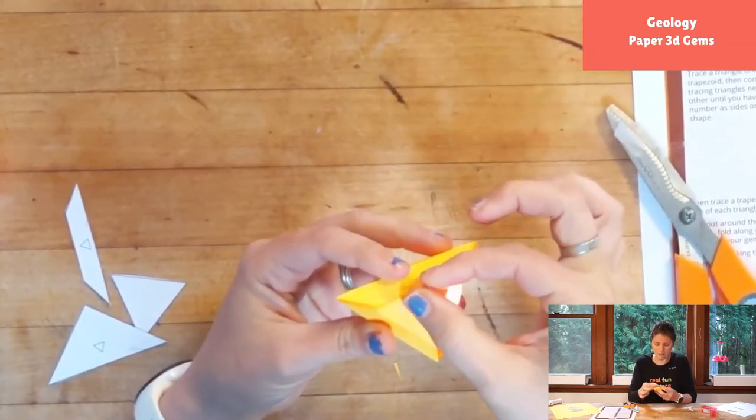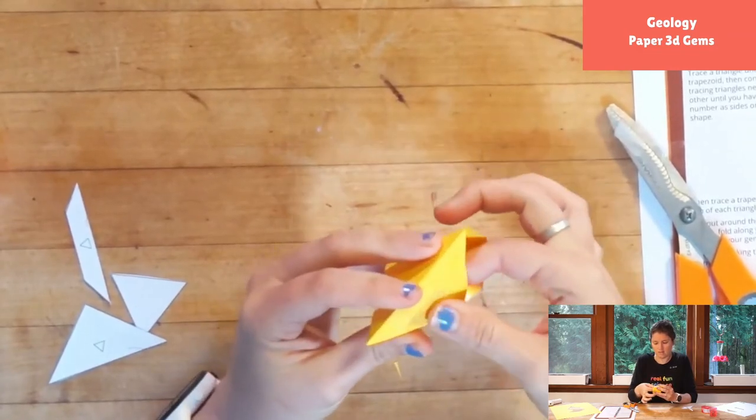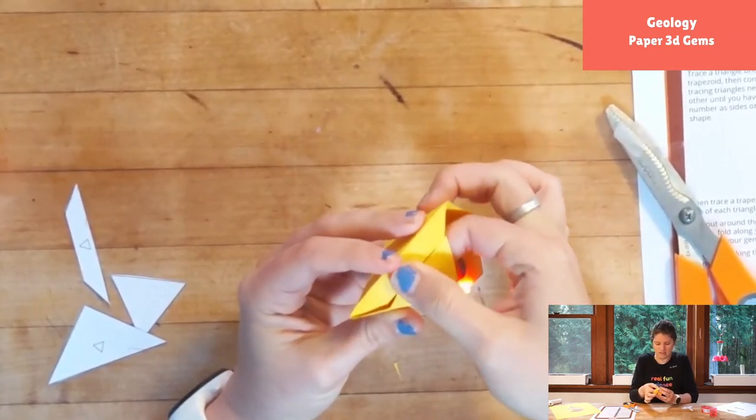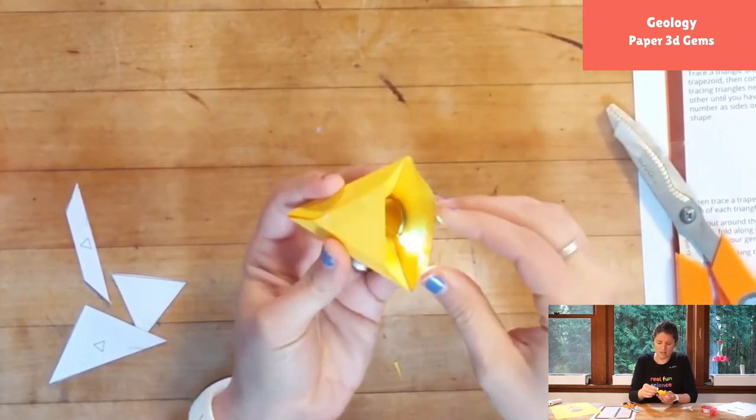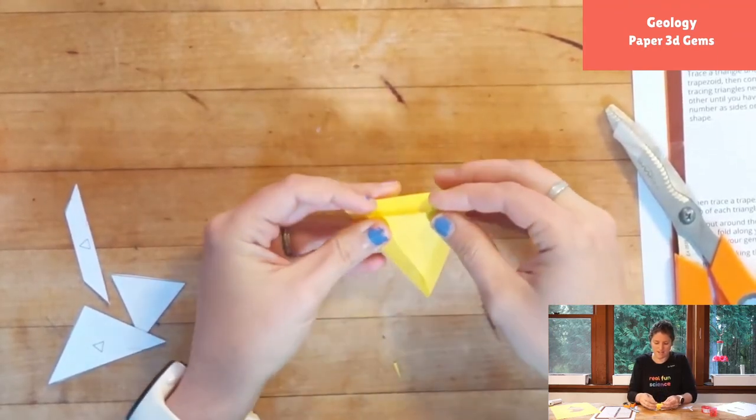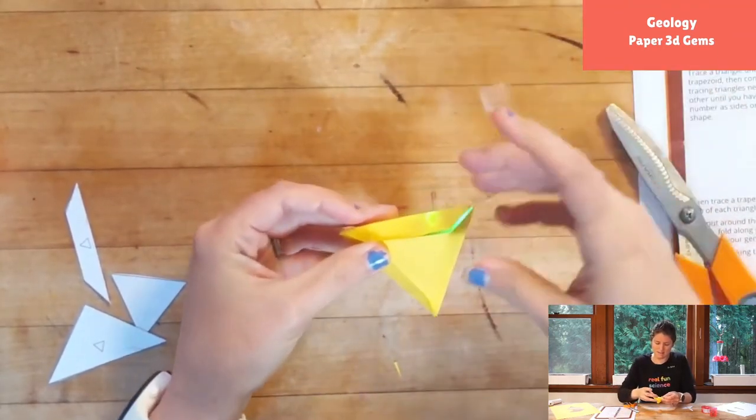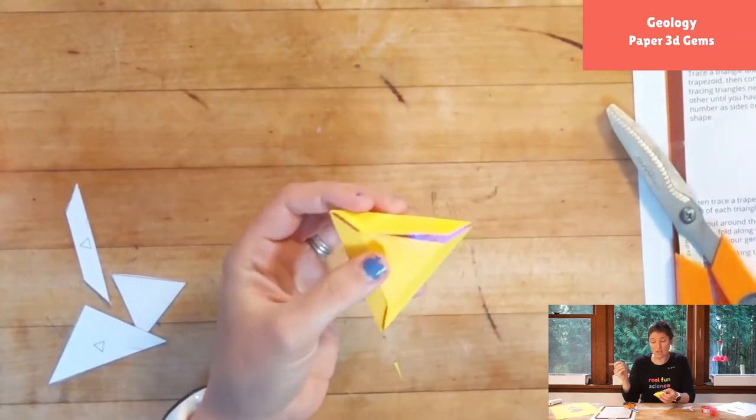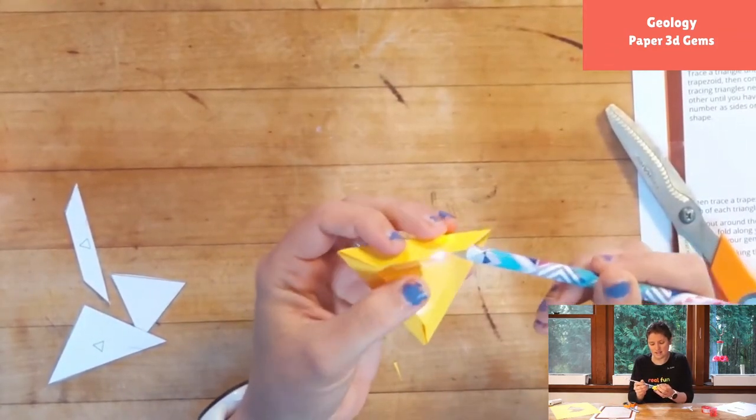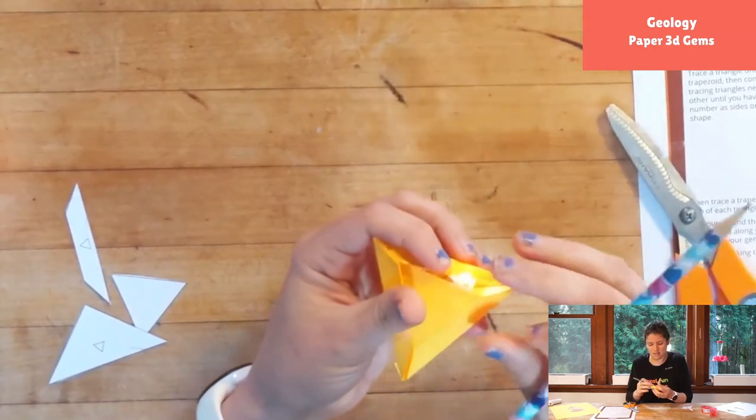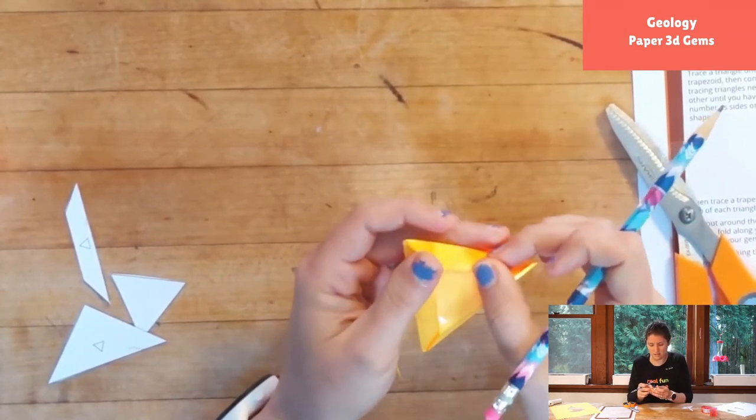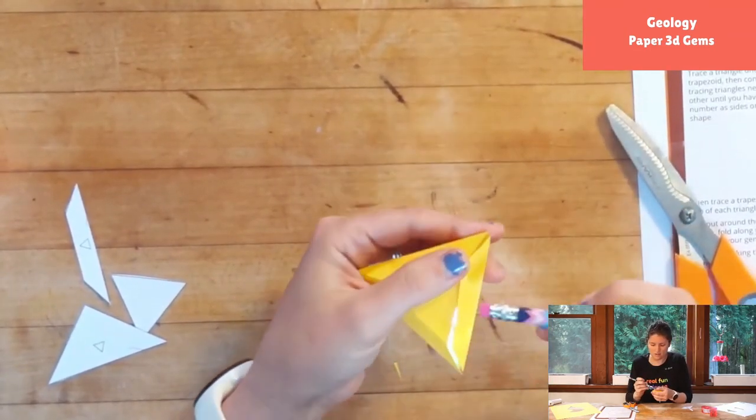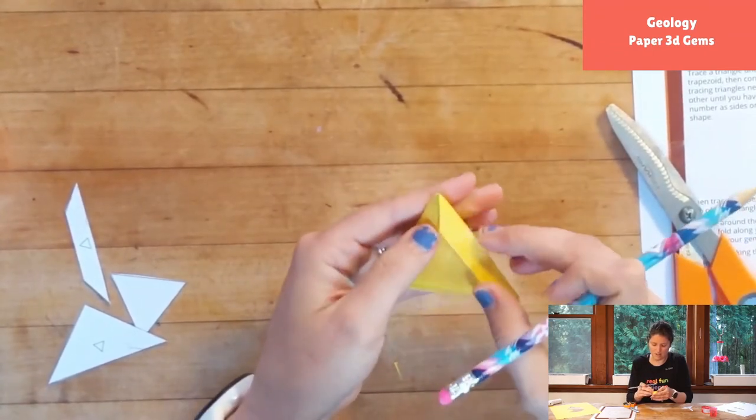All right, so we will open this up just ever so slightly. The last one's always the hardest one to close because you don't have that nice ability to get in there and press. But what you can do is you can take something long and skinny like a pencil sometimes, and you can try to get that under there to press down, or you can just press really gently.